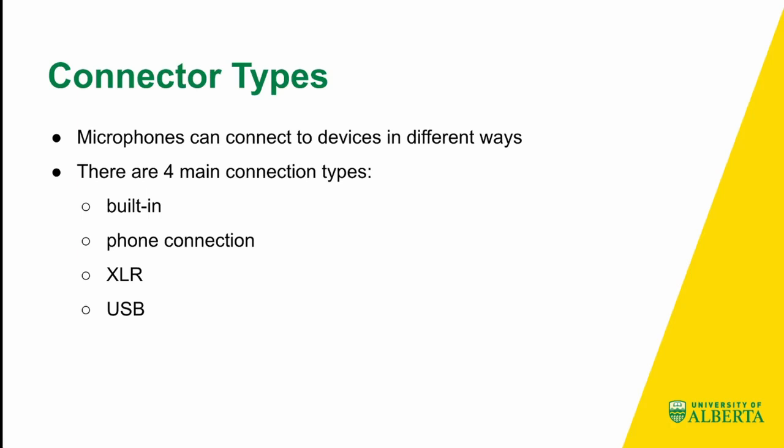Now that we know what a polar pattern is and what a frequency response is, we can pick out a pretty decent microphone. The other thing we need to know is the connector type — microphones have to connect to devices; they don't record by themselves. There are four main ways to connect a microphone: built-in microphones, which technically don't connect; the phone connection, which is a very popular option; the XLR, which is the most common in professional settings; and the USB, which is very common nowadays.